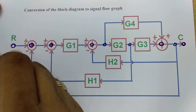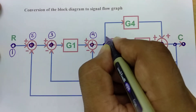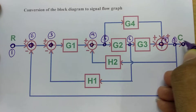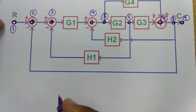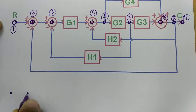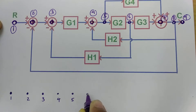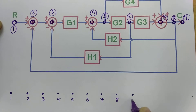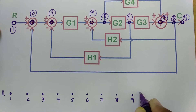Now we will give numbering to all the nodes. This is node 1, second, third, fourth, fifth, sixth, seventh, eighth, and ninth. We have assigned nine nodes in total. I will now draw nine nodes: first, second, third, fourth, fifth, sixth, seventh, eighth, and ninth. At the first node there is input R, and at the ninth node there is output C.